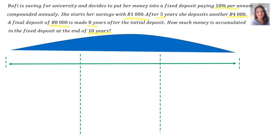Let's make a summary, but we will read through the question again. Bafi decides to put her money into a fixed deposit, paying 10% per annum — there's an important bit — compounded annually. You will see that the rate is 10% compounded annually, and that's shown by the parabola picture there, which means it applies for the whole timeline.